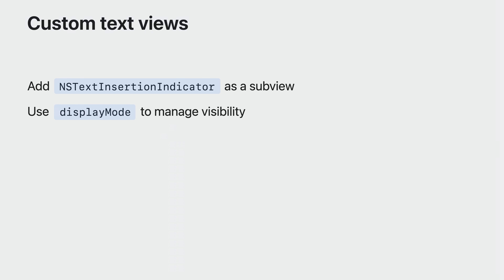Apps using standard AppKit text views will get this automatically. If you have a custom text view, we have a new API you can adopt. You can replace your custom text insertion indicator drawing with the NSTextInsertionIndicatorView. Add this view as a subview on your custom text view and you will get the new insertion indicator that is consistent across the OS. Note that you will be in charge of updating the frame of the insertion indicator and whether it is visible. Update the displayMode property to hidden when your text view resigns first responder to hide the indicator.